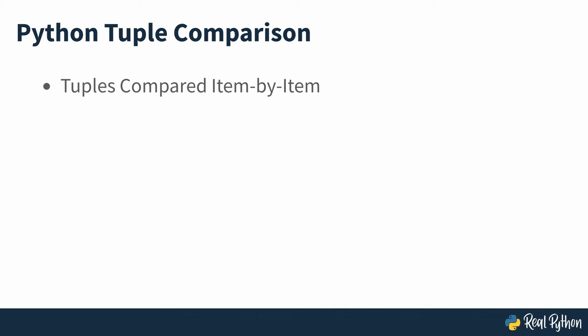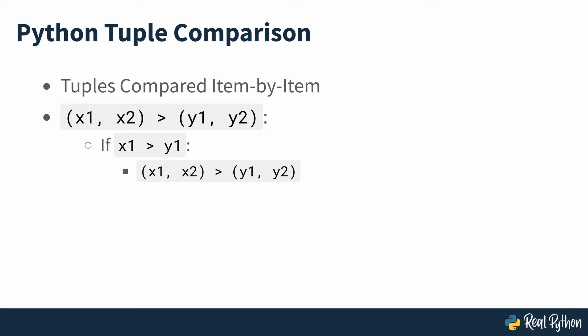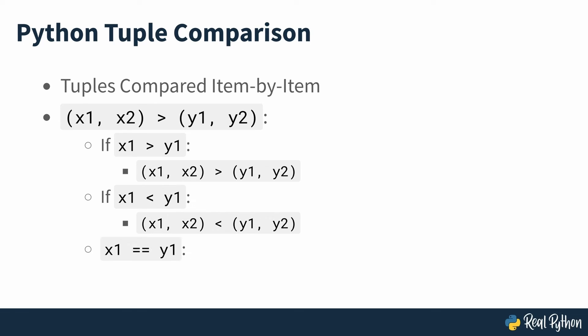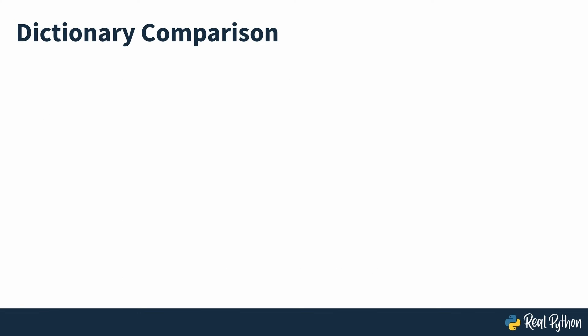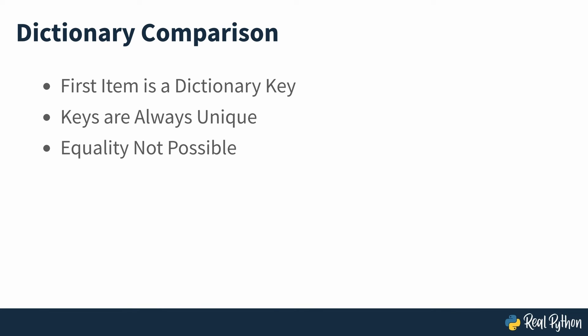Python compares tuples item by item. For example, to determine if (x1, x2) is greater than (y1, y2), Python first tests if x1 is greater than y1. If this is true, Python concludes that the first tuple is greater than the second without checking the rest of the items. If x1 is less than y1, Python concludes the first tuple is less. If x1 equals y1, Python compares the second pair of items using the same rules. Since dictionary keys are unique, the items can't be equal, so Python will never have to compare the second values.